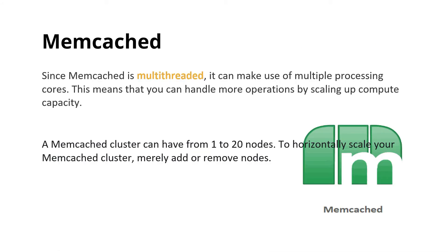Let us understand Memcached in a bit more detail. Memcached is multi-threaded and can make use of multiple processing cores, meaning you can handle more operations by scaling up compute capacity. In Memcached, you can create from one node up to a maximum of 20 nodes. You can also add or remove nodes in your Memcached server. It is basically used in use cases where you have to render static web pages from your web application.